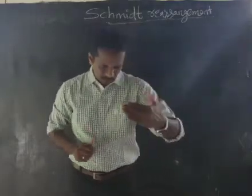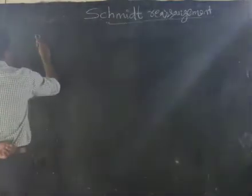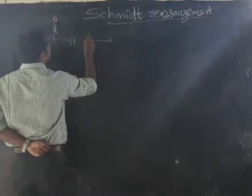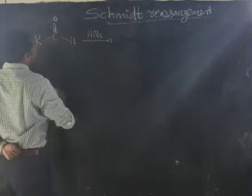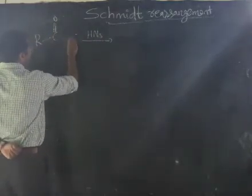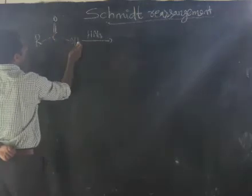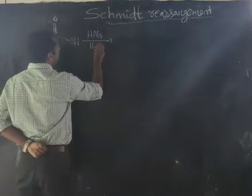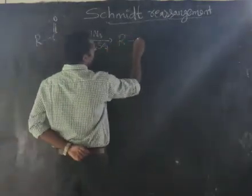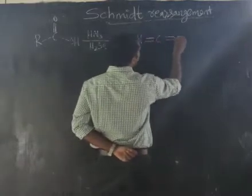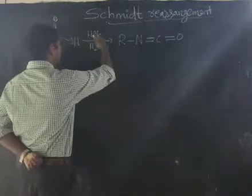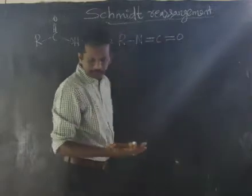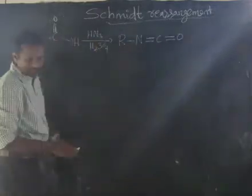The overall reaction: carboxylic acid (RCOOH) reacts with hydrazoic acid (HN₃) in the presence of H₂SO₄ to give isocyanate (R-N=C=O). This rearrangement occurring during this reaction is what is known as Schmidt rearrangement. Let us go through the mechanism of Schmidt rearrangement.